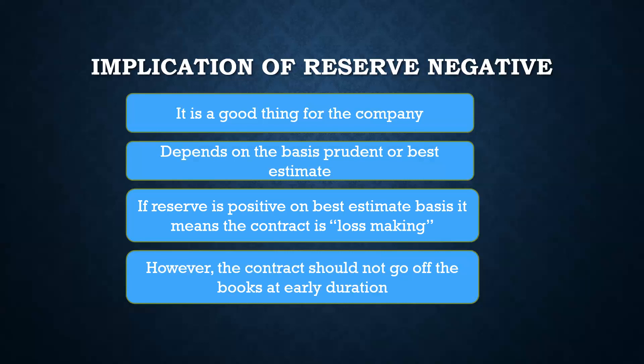So I think by this you would be able to understand that reserve can be negative. The reserve being negative on a best estimate basis is a good thing for the company, and if on a prudent basis the reserve is also negative, then it is a tremendous thing for the company — the product is written on very profitable terms. I hope this bursts the myth that reserve cannot be negative. Reserve can be negative, and we expect the reserve to be negative. The current regimes are all best estimate regimes, although it is not the case in India yet. But India would also move into a best estimate regime with IFRS 17 implementation. Most advanced countries in the world are already on a best estimate basis and they are keeping negative reserves.